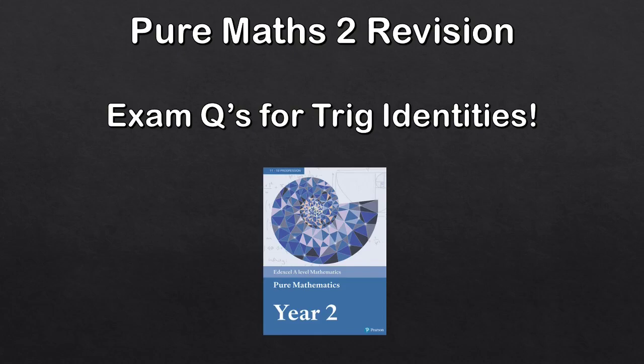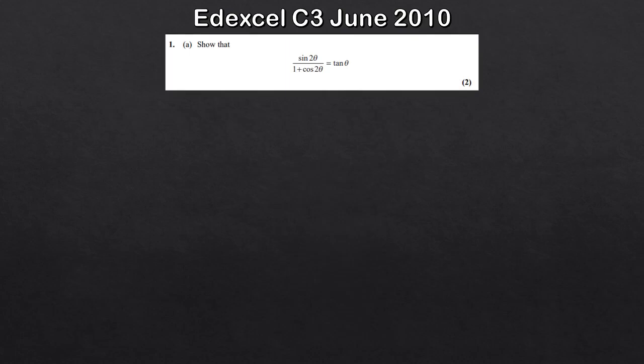Hey guys, welcome to another A-level maths revision video. In this video today we're going to take a look at a topic which does cause a lot of issues every year, and that's trig identities. So part of trigonometry, it's quite important because you do sometimes need these trig identities to go on to solve equations. So let's have a look at some questions — this first question here, hopefully a nicer one to start with.